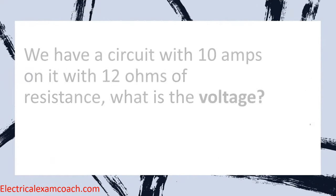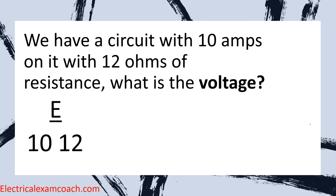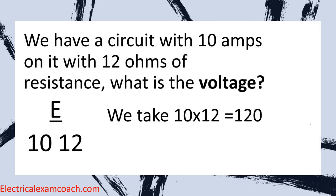Finally, we have a circuit with 10 amps and 12 ohms of resistance. What is the voltage? We're solving for E. We know 10 amps and 12 ohms. Following the Ohm's Law pyramid, we multiply: 10 multiplied by 12 equals 120. So E equals 120 volts. Great job!